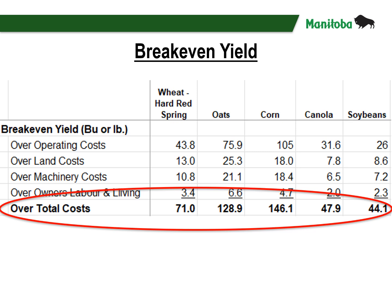This slide shows the breakeven yields for the crops. Breakeven yields are calculated by dividing costs over the expected price per bushel. Breakeven yields can show the likelihood of generating profitability when one compares them to average farm yields. In 2025, breakeven yields are: hard red spring wheat at 71 bushels per acre, oats at 128.9 bushels per acre, corn at 146.1 bushels per acre, canola at 47.9 bushels per acre, and soybeans at 44.1 bushels per acre.